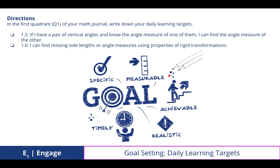In the first quadrant of your math journal, write down your daily learning targets. 1.5: If I have a pair of vertical angles and know the angle measure of one of them, I can find the angle measure of the other. And 1.6: I can find missing side lengths or angle measures using properties of rigid transformations.